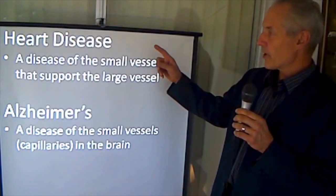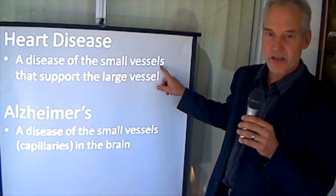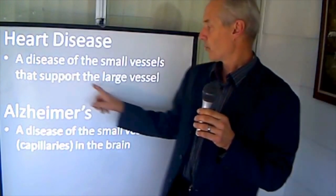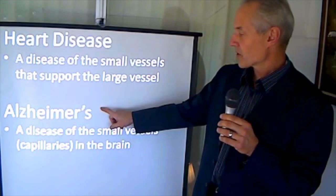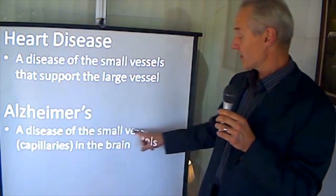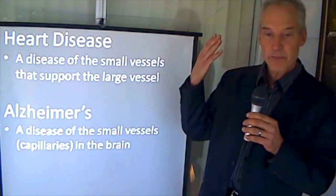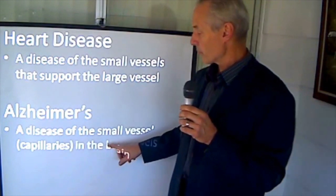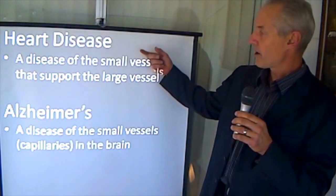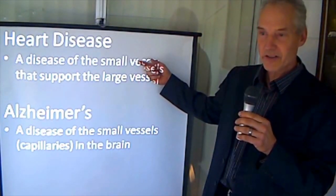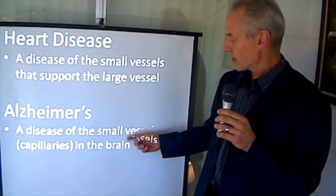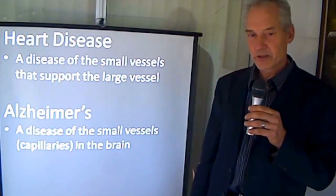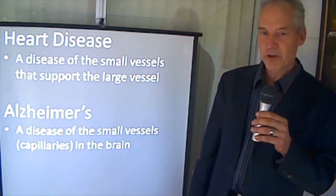So in summary, heart disease is a disease of the small vessels that support the large vessels. So small vessels down to capillaries. And Alzheimer's disease is a disease of these same small vessels that happen to be in the brain. So it's the capillaries in the brain. So we can see now the connection between heart attacks and heart disease, it's a disease of very small vessels, and Alzheimer's disease, which is also a disease of the small vessels. My name is Dr. Tom Lewis with Real Health Clinics. Thank you very much for your time.